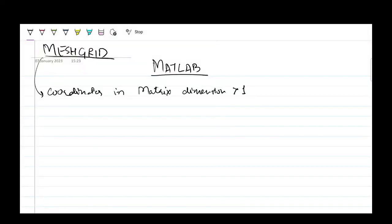In this video we will be talking about the meshgrid function of MATLAB, which is used to get the coordinates of any plot. The size or shape would be like a matrix with the dimension grid — 2D or 3D, whatever data you need.